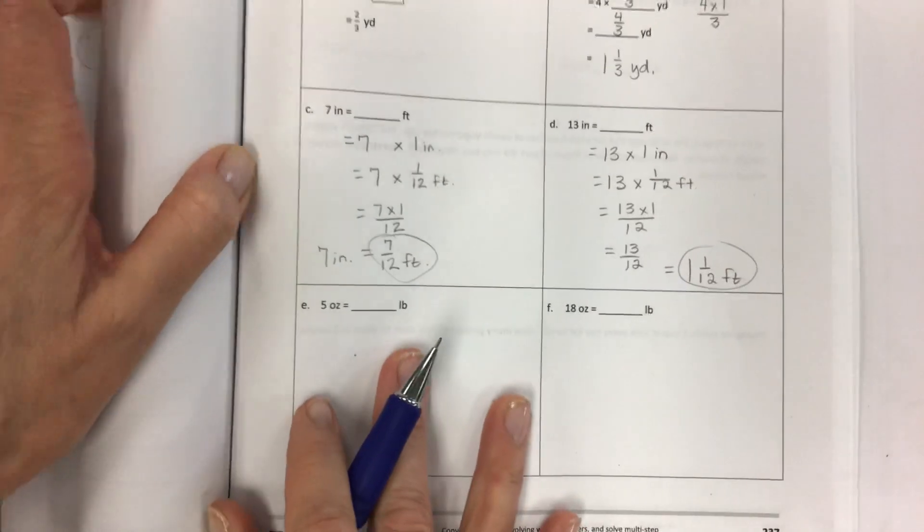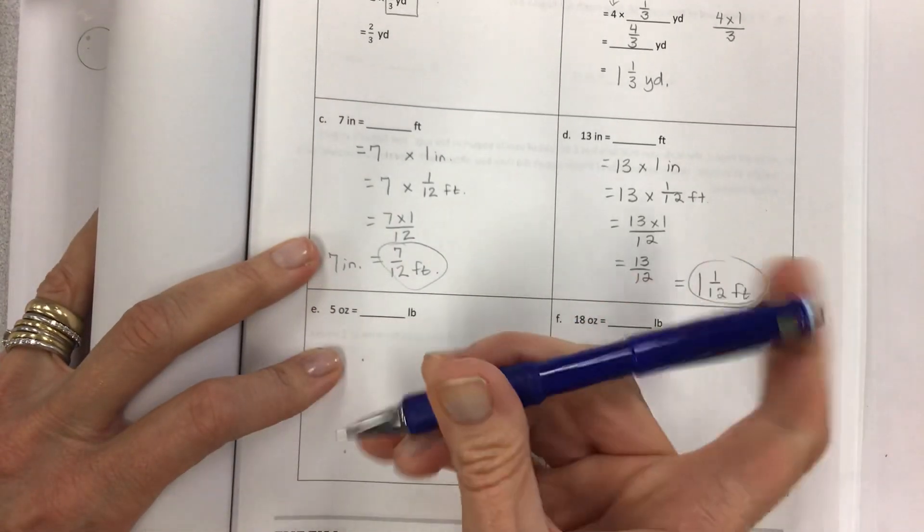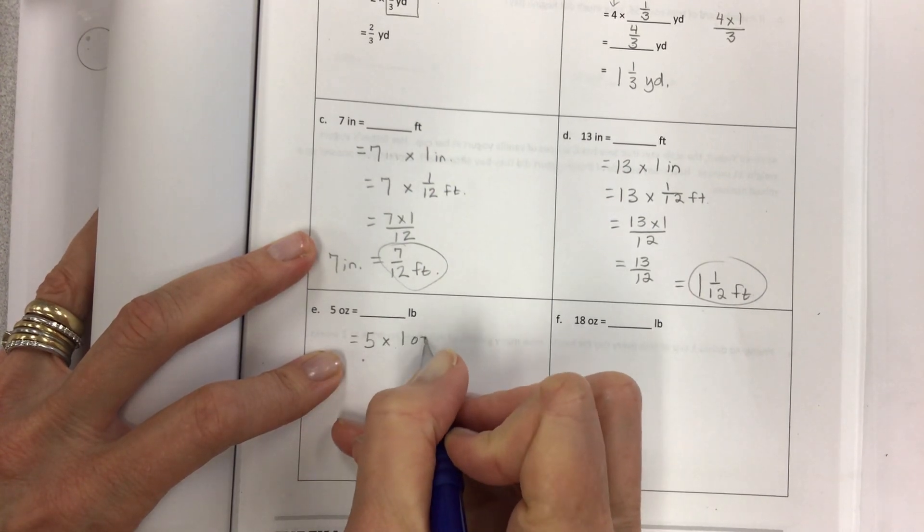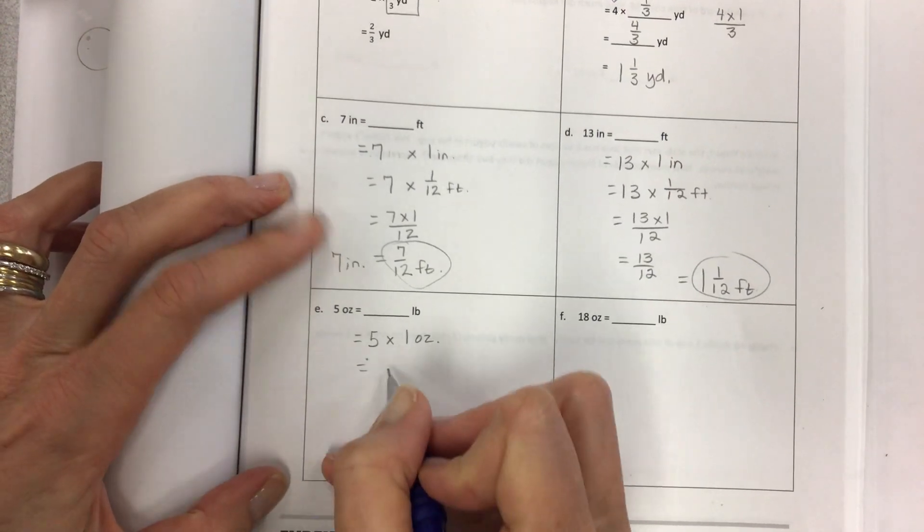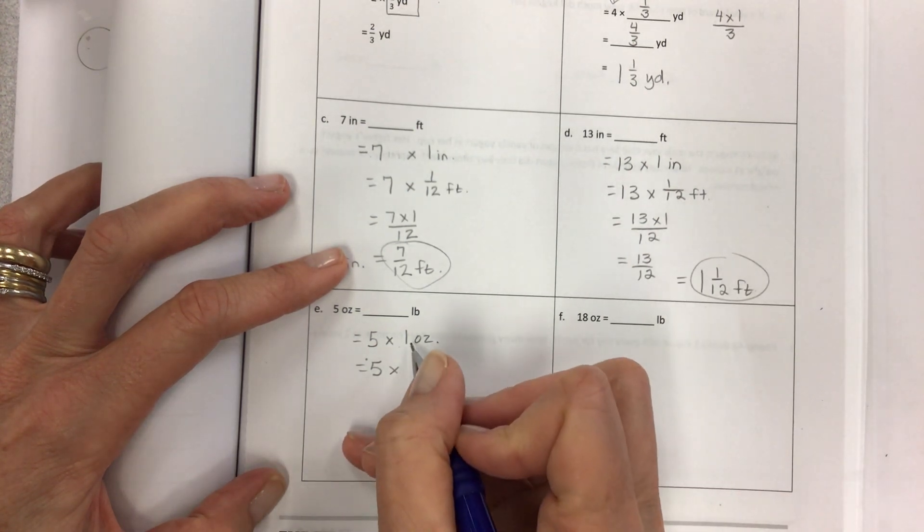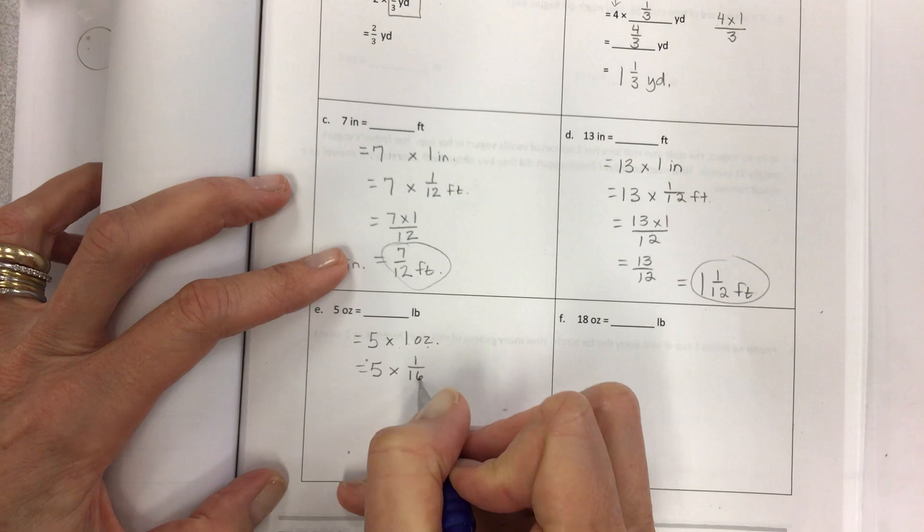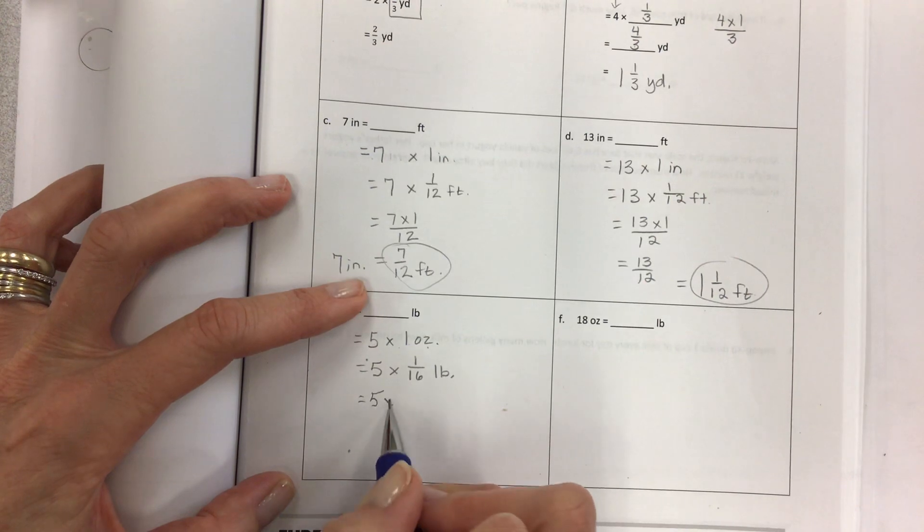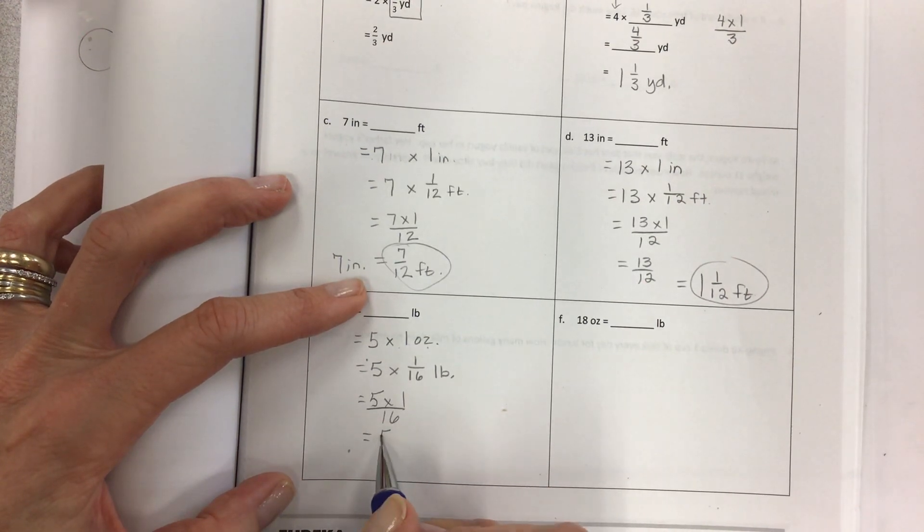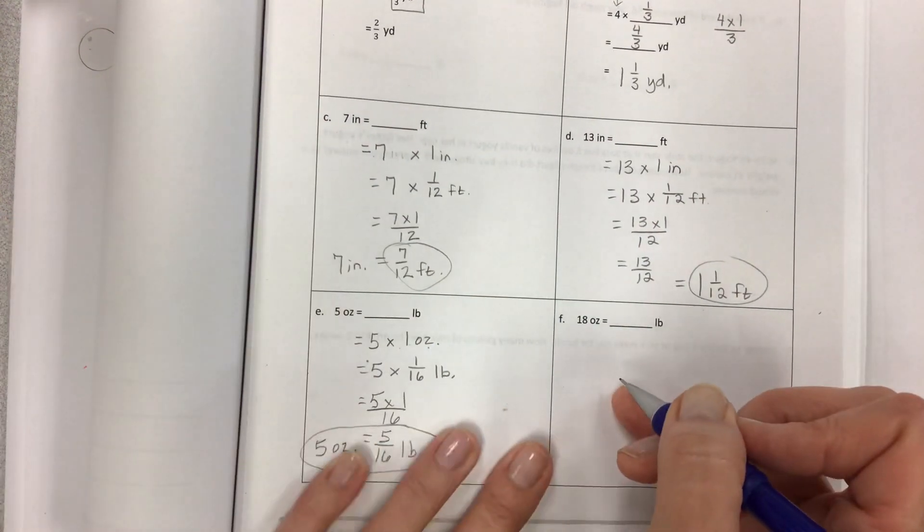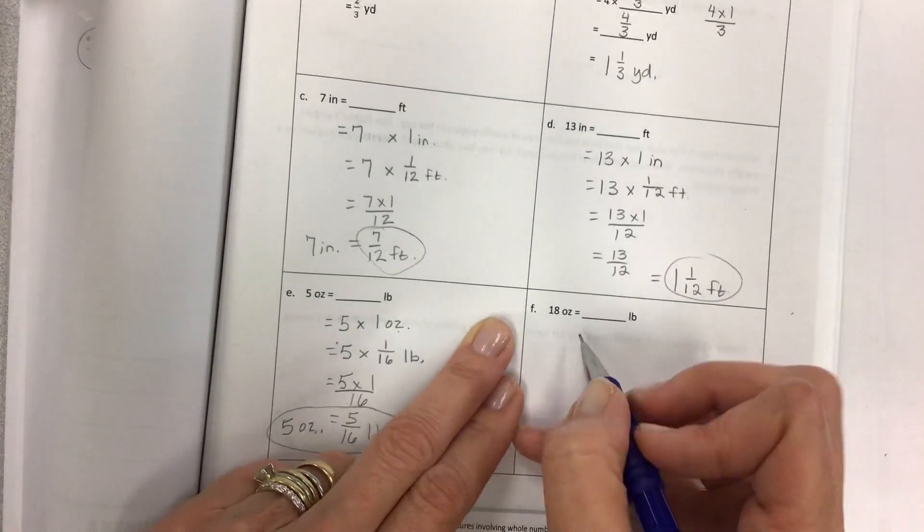Five ounces equals how many pounds? You have to know ounces to pounds conversion. Again, use the reference page 167. Five times one ounce. And then ounces and pounds. It's 16 ounces to a pound. So one ounce is one sixteenth of a pound. So that's our new unit. Five times one over 16. Five sixteenths of a pound.